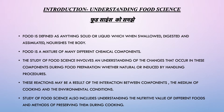Food is a mixture of many chemical components such as different nutrients, water and fiber. When we talk about food science, it basically involves the understanding of the changes that occur in these components during food preparation or by natural processes such as ripening or aging. Food science also includes the understanding of nutritional value of different food items and food processing procedures such as preservation.